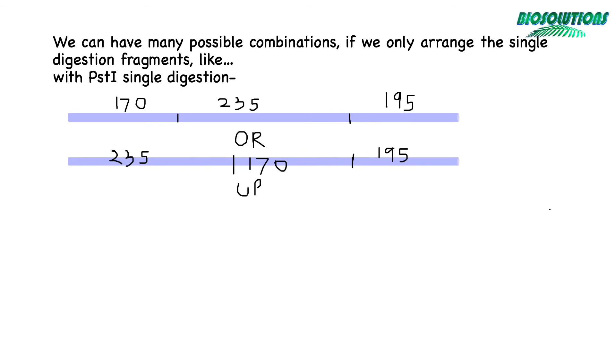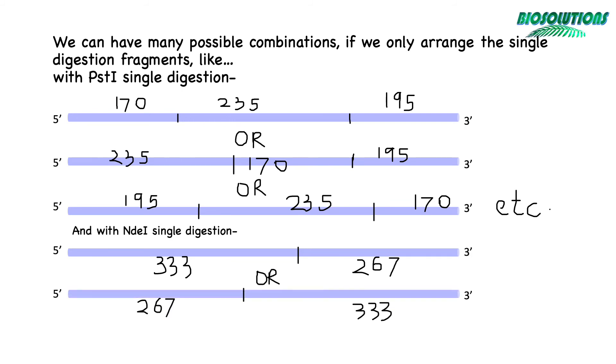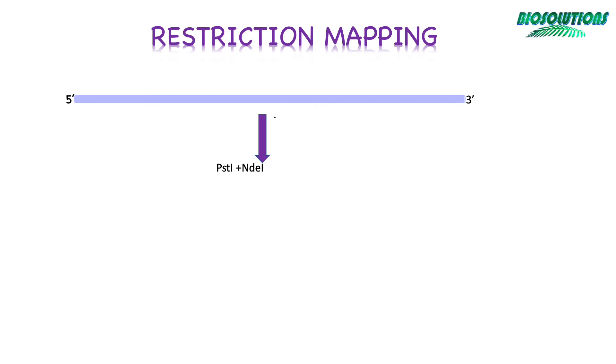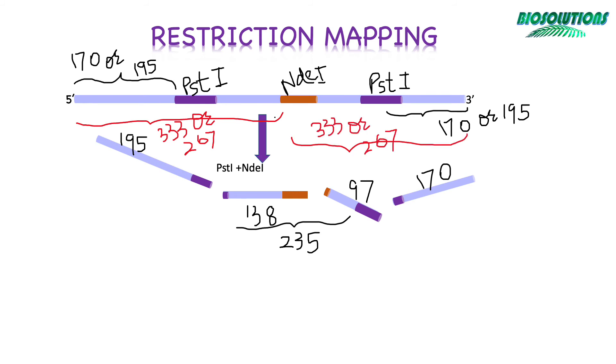Similarly, for NdeI we expect only one restriction site and two possibilities. Now we look at double digest fragments to realize that fragment 138 base pairs and 97 base pairs long add up to 235 base pairs. This means NdeI site is within the 235 base pair fragment, and when we perform a double digest, NdeI cuts within this fragment and makes two new fragments of 97 and 138 base pairs.